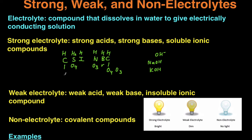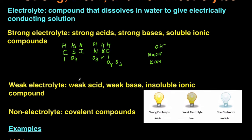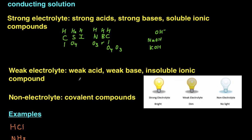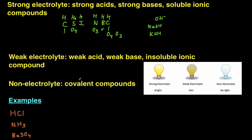So that's what a strong electrolyte, weak electrolyte, and non-electrolyte is. Next, we're going to go into examples. I've got four examples here, and we're just going to go through them and determine if each of these is going to be strong, weak, or a non-electrolyte.